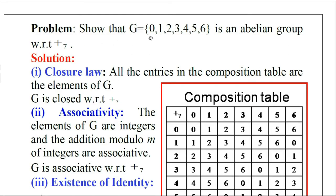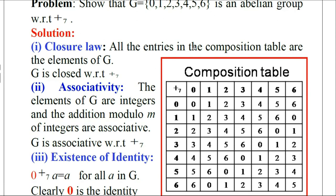Show that the set G = {0,1,2,3,4,5,6} is an abelian group with respect to addition modulo 7. This set G consists of 7 elements from 0 to 6. First we have to form the composition table. Write the elements of G in the first row as well as the first column. Here we write the operation — addition modulo 7 is the binary operation. We are going to add the corresponding elements.